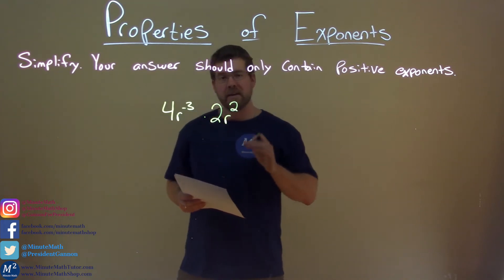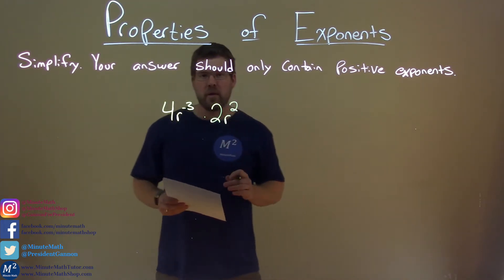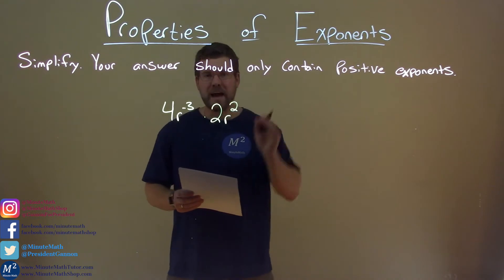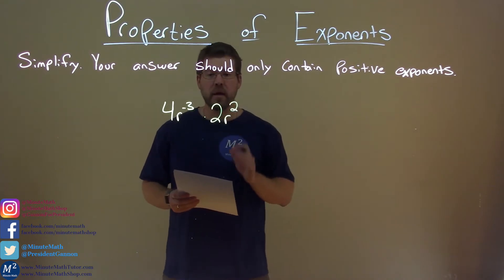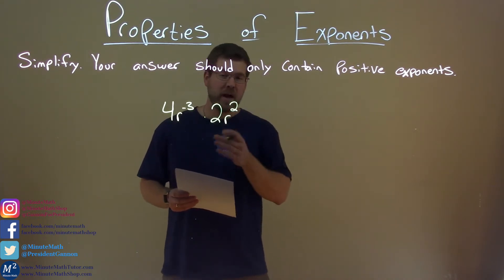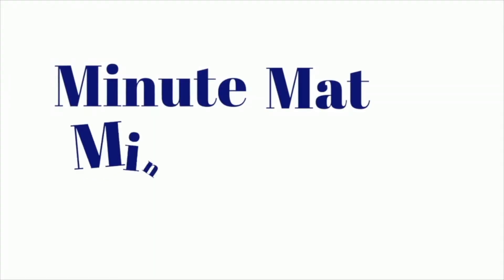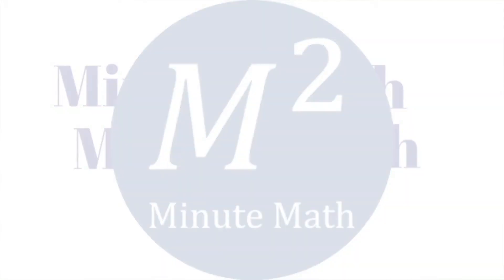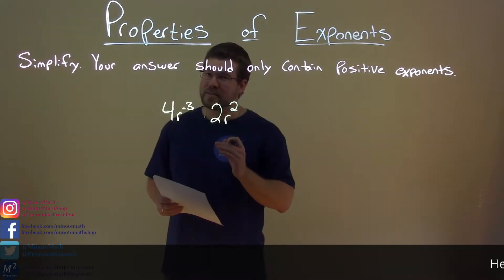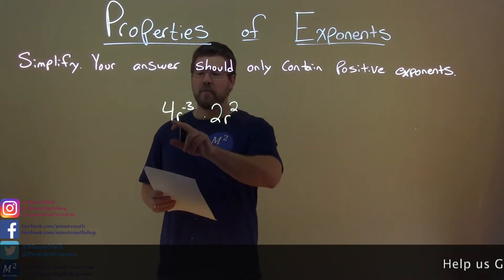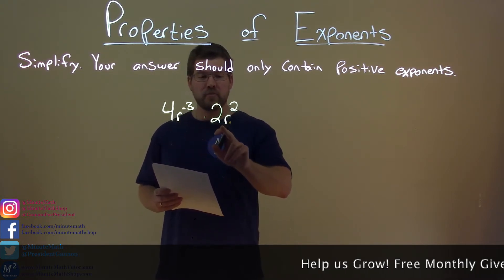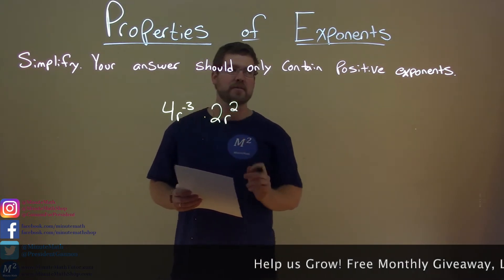Hi, I'm Sean Gannon, and this is Minute Math. Today we're learning about properties of exponents. If I was given this problem, we need to simplify 4r to the negative third power times 2r squared.